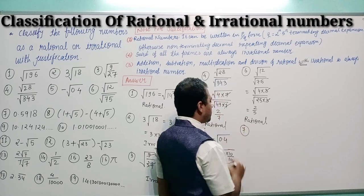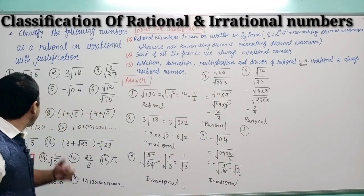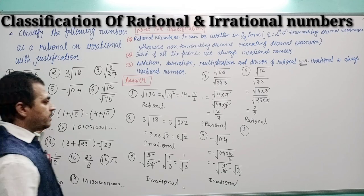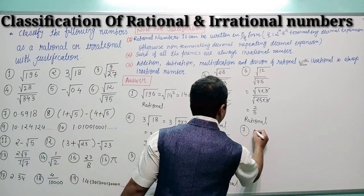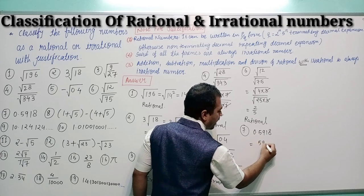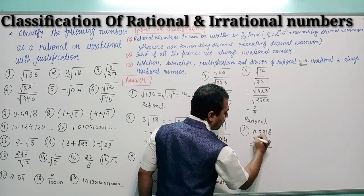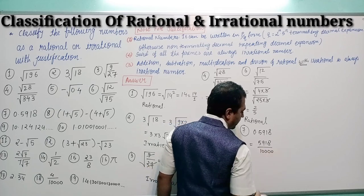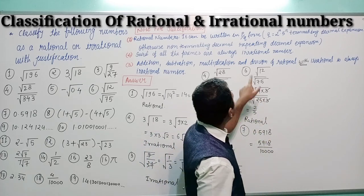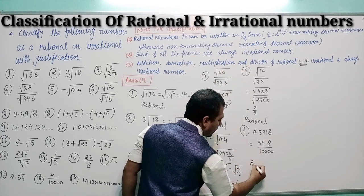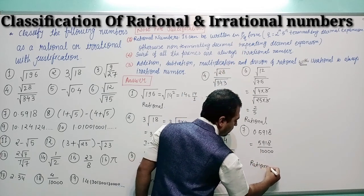Question number 7: 0.5918. This can be written as 5918/10000, which means it can be expressed in p/q form. So it is a rational number.